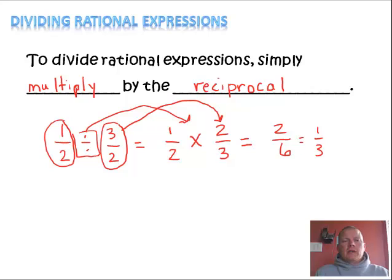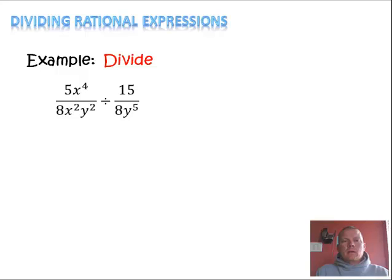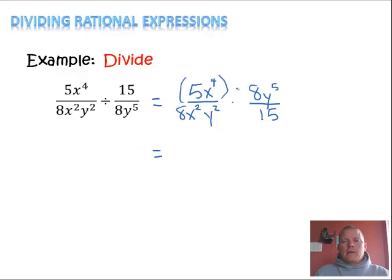So let's look at an example. We're going to divide 5x to the fourth over 8x squared y squared divided by 15 over 8y to the fifth. So we're just going to use our rules here. Our rules with fractions are to leave the first one, 5x to the fourth over 8x squared y squared, and we're going to change the division to multiplication, and we're going to flip the second one, so 8y to the fifth over 15. Then we're going to follow our rules from yesterday's lesson. I'm just going to combine them together. I'm going to multiply this times this: 5 times 8 is 40, I have x to the fourth, y to the fifth, nothing to combine those with.